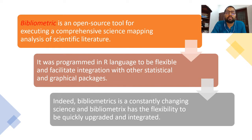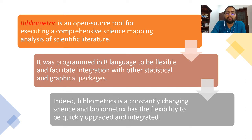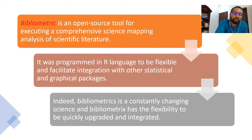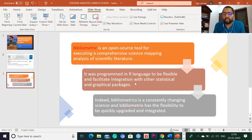Bibliometrix is an open source tool for executing a comprehensive science mapping analysis of scientific literature. It was programmed in R language to be flexible and facilitate integration with other statistical and graphical packages. Bibliometrics is a constantly changing science, and Bibliometrix has the flexibility to be quickly upgraded and integrated. Now we can go for the practical sessions of RStudio.